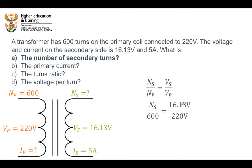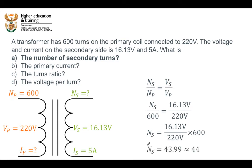The turns ratio is the same as the voltage ratio. We can rearrange this equation and multiply both sides by 600 — remember 600 is a number of turns, it doesn't have a unit, so it's just a number; every other value in our equation does have a unit. Therefore we find that the number of turns in the secondary coil is equal to 43.99, which we can round off to 44 turns. Part one is done.